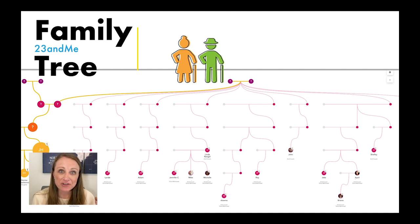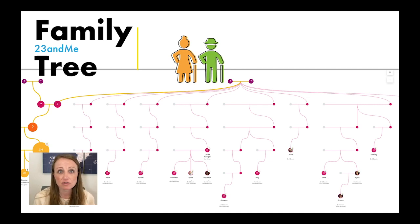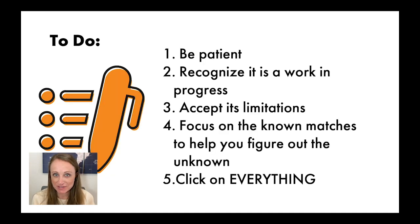Whenever you're watching a learning video, it's imperative that as soon as you're done, you go and do. Here's your homework: be patient with this tool because it is a work in progress. Accept its limitations — it's not going to be right every time, but it will be right some of the time. Focus on your known matches to help you reorganize the unknown matches. That's really the key. So you can see what kinds of hints the tree is trying to give you about your unknown matches. Click on everything every time — you can't ruin it. But be careful: so far I can't find an undo button, so do be a little careful about what you're doing because it's harder to undo.